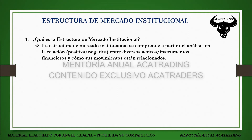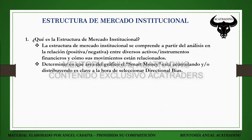La estructura de mercado institucional se comprende a partir del análisis de la relación positiva o negativa que existe entre diversos activos o instrumentos financieros y cómo sus movimientos están relacionados. Una relación positiva quiere decir que si en un instrumento A tenemos movimientos alcistas, vamos a ver movimientos similares en un instrumento B. Por el contrario, si la relación es negativa, veremos movimientos bajistas en el instrumento B. Determinar en qué área del gráfico el Smart Money o el Market Maker está acumulando y/o distribuyendo órdenes es la clave a la hora de seleccionar el Directional Bias e identificar la dirección del precio.